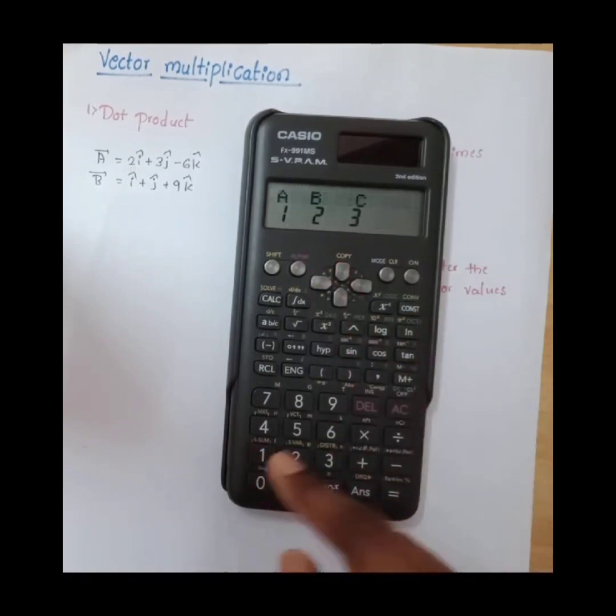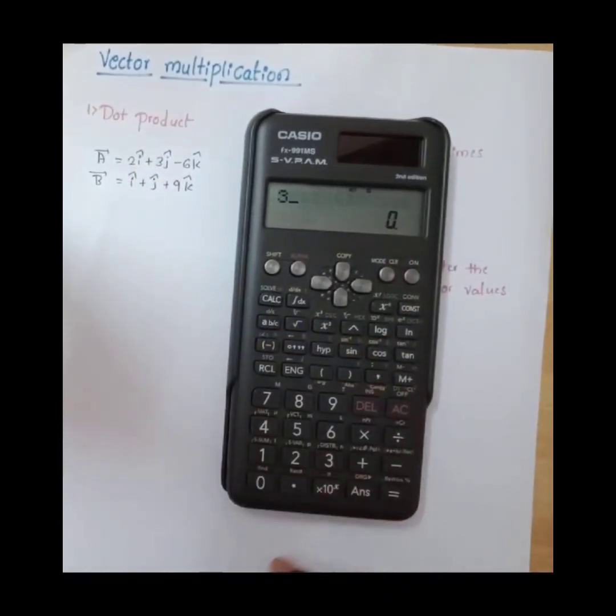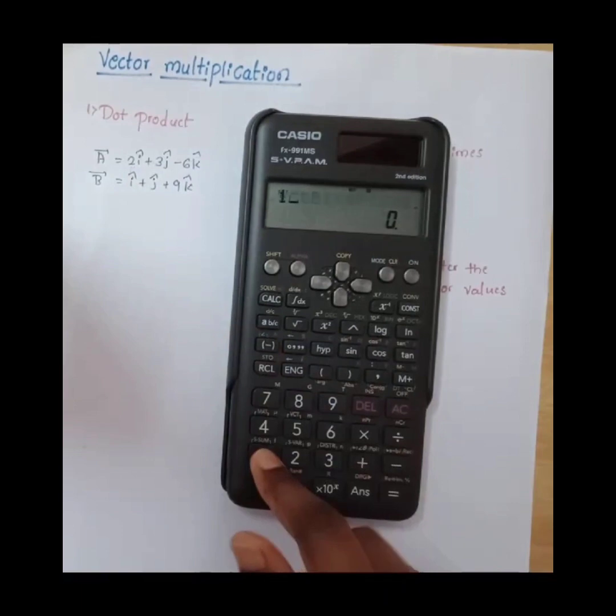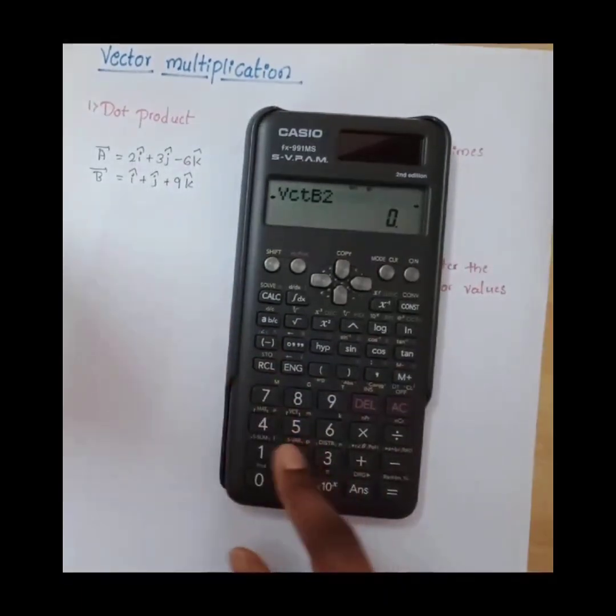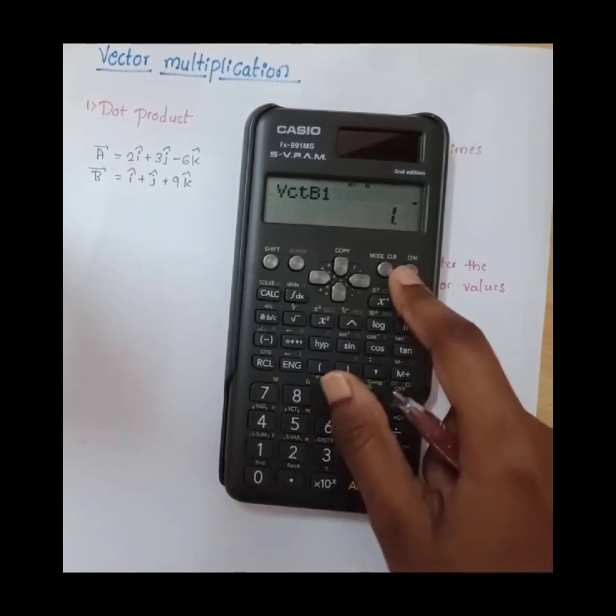Press one. Vector B is also a three dimensional vector, so press three equals. B1 is one equals, B2 is one equals, B3 is nine.